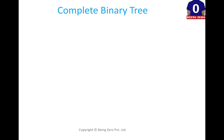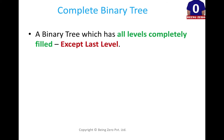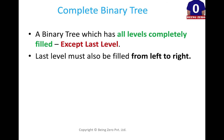Let's try to understand what a complete binary tree is. A complete binary tree is a tree where all the levels are completely filled except the last level. The last level should also be filled from left to right. Those are the two requirements for a complete binary tree.